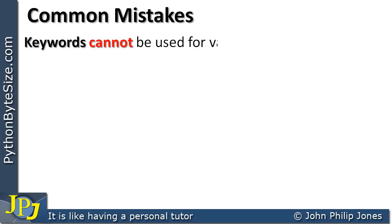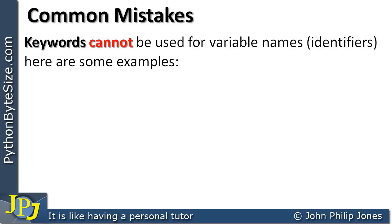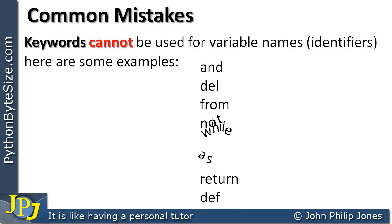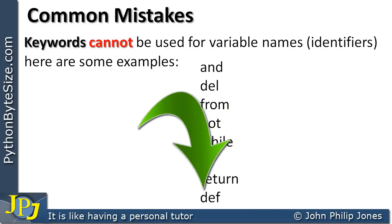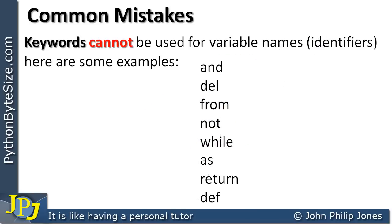Other things we need to concern ourselves with are keywords. These cannot be used for variable names. Keywords include: and, del, from, not, while, as, return, and def. These are words used by Python itself — for example, 'and' is a logical operator, and 'def' is an abbreviation for definition used when writing code. They each have a particular purpose in the language, so we cannot use them as variable names.